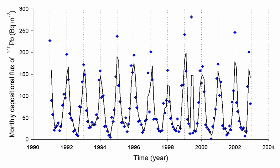214Po, 0.1643 ms, alpha decaying to 210Pb, which has a much longer half-life of 22.3 years, beta decaying to 210Bi, 5.013 days, beta decaying to 210Po, 138.376 days, alpha decaying to 206Pb, stable. The radon equilibrium factor is the ratio between the activity of all short-period radon progenies, which are responsible for most of radon's biological effects, and the activity that would be at equilibrium with the radon parent.